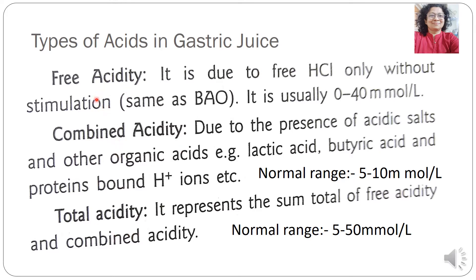Let us look at the definitions of each. Free acidity is due to the free HCl — that is, the acidity of gastric juice which is only because of HCl — and its reference range is 0 to 40 millimoles per liter. Combined acidity is due to the presence of weak organic acids and acidic salts, which include lactic acid, butyric acid, and protein-bound H ions.